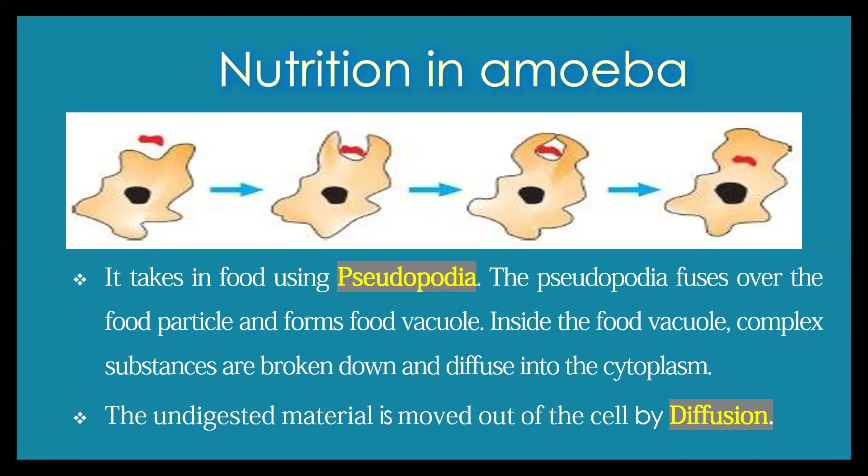So first, the pseudopodia capture or engulf the food. Then a food vacuole is formed around the food. Inside the food vacuole, the digestion process is initiated and completed. The undigested food particles are diffused out by the process called diffusion, while the digested food particles enter into the cytoplasm. In this way, amoeba performs its nutrition.